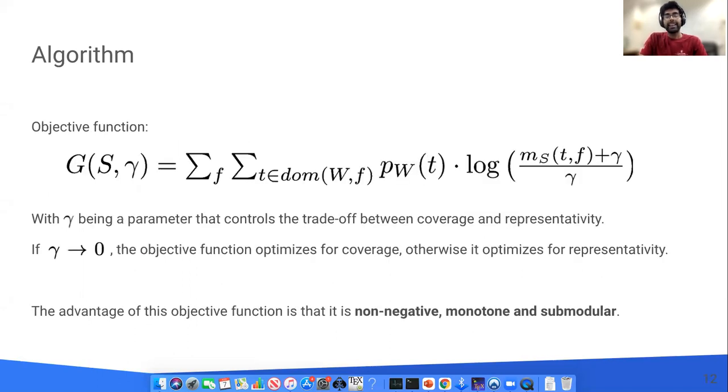So our key idea is to cast the original objective function into a new objective as shown above. Here, gamma is a parameter that controls the trade-off between the two metrics. When gamma is close to zero, the function optimizes for coverage. And when gamma is close to one, we optimize for representativity. This transformation allows us to develop a greedy algorithm that has a sub-quadratic complexity as compared to known algorithms in the space, such as k-medoids and hierarchical clustering that have quadratic complexity.